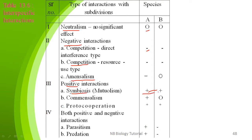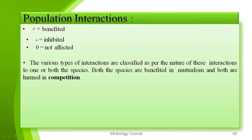Positive interaction may be symbiosis — where both are beneficial to each other — commensalism, where one is beneficial and the other is non-affected, or protocooperation, where both are beneficial. The fourth type is positive-negative interaction, which includes parasitism and predation. In parasitism one is benefited and the other is inhibited. Similarly in predation one is benefited and the other is inhibited. In mutualism both species are benefited; in competition both are harmed.